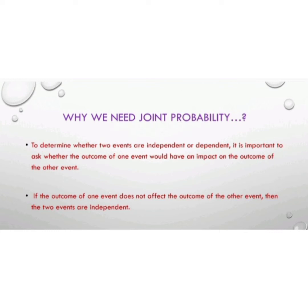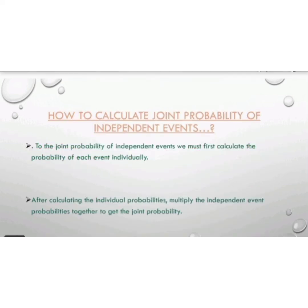Why do we need joint probability? To determine whether two events are independent or dependent, it is important to ask whether the outcome of one event would have an impact on the outcome of the other event. If the outcome of one event does not affect the outcome of the other event, then the two events are independent. Joint probability helps us determine whether two events are independent or dependent.